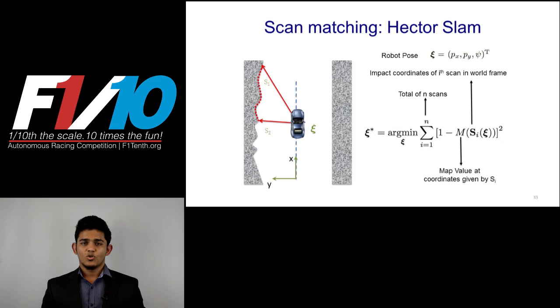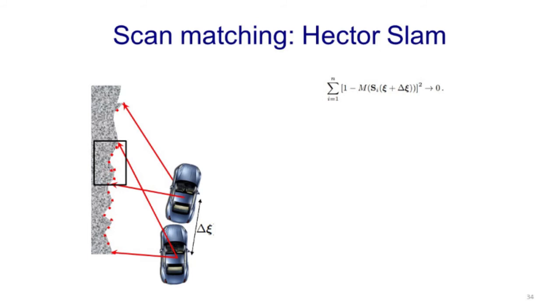Thus, when each scan point corresponds to a map cell having value 1, the summation will result in 0. For a normal case where we do have certain uncertainties and minor errors, our goal is to minimize this summation. The pose function xi can also be written as summation of previous pose and the change in pose in the small time interval. This now changes the minimization function to the function over change in pose.